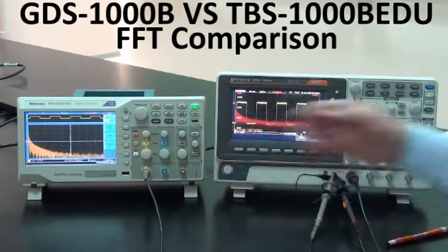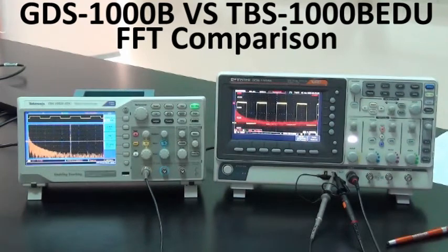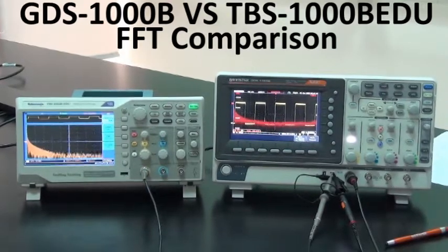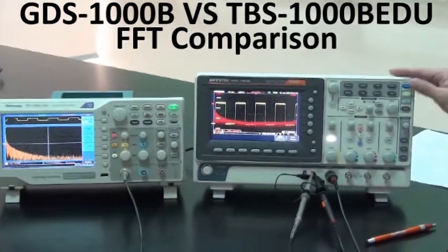On the left, Tektronik TBS-1000EDU oscilloscope. Now, activate FFT mathematical function for both oscilloscopes and input a square waveform signal with 1kHz and 2V. First, let's take a look at GDS-1000B oscilloscope after pressing auto set.